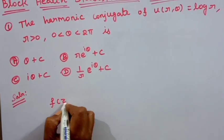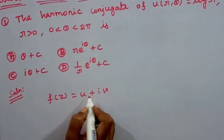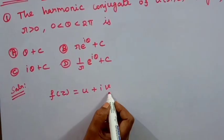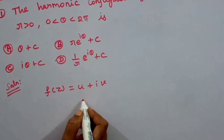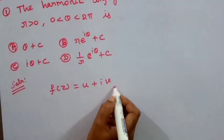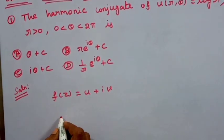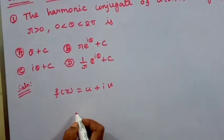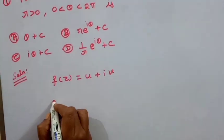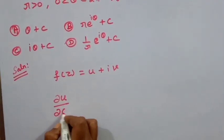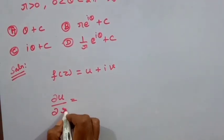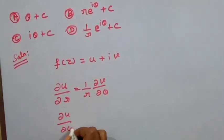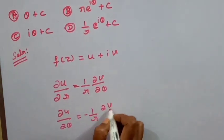We have an analytic complex function u plus iv. We use the polar form Cauchy-Riemann equations. We set up: dou u by dou r equals 1 by r times dou v by dou theta, and dou u by dou theta equals minus r times dou v by dou r.